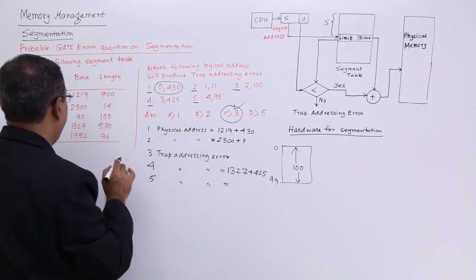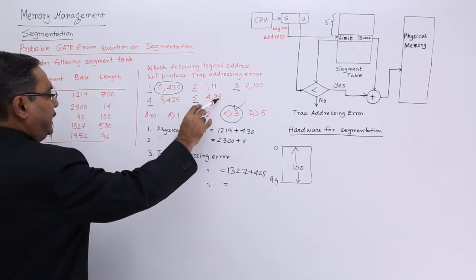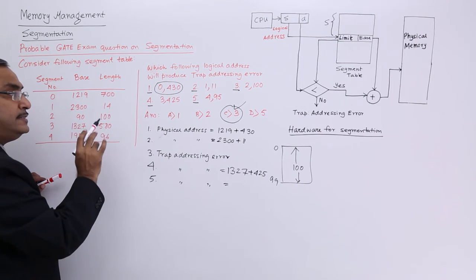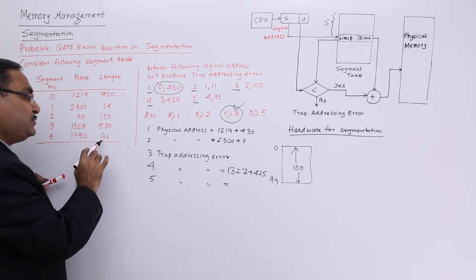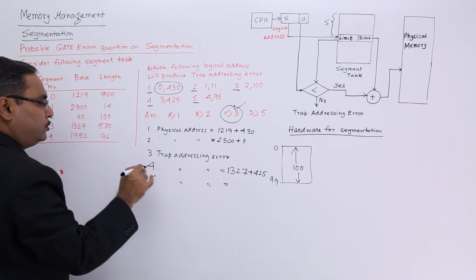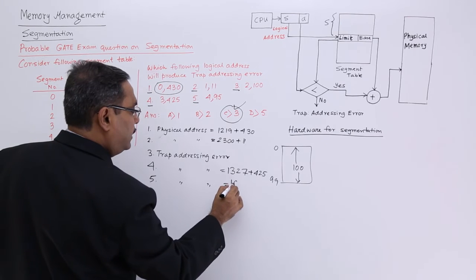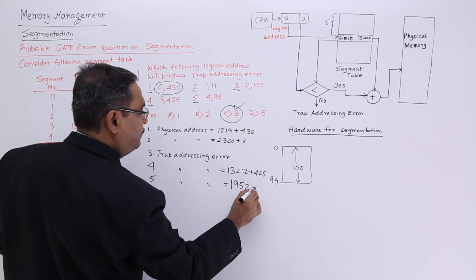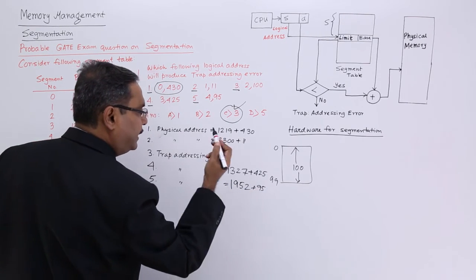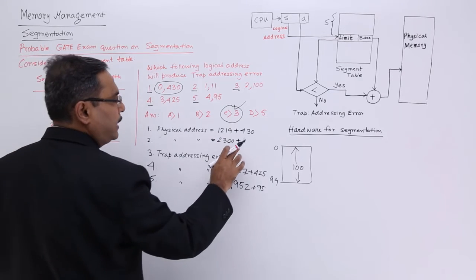And the last one: 4,95. 95 is less than 96, so 95 is okay. Physical address will be 1952 plus 95. So whatever value you are getting after doing the sum, you should work accordingly.